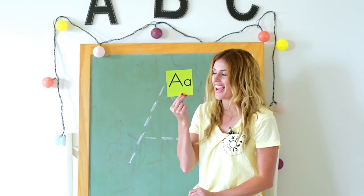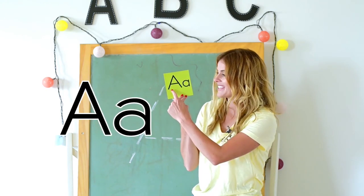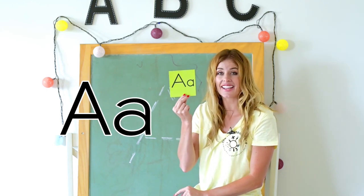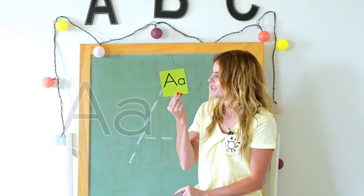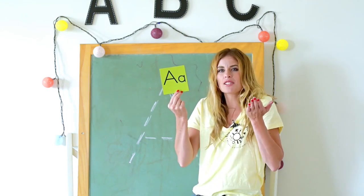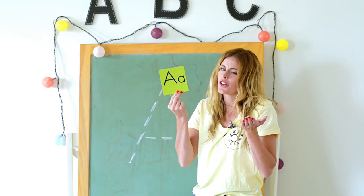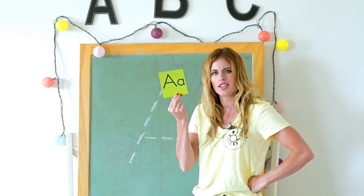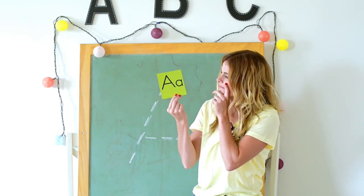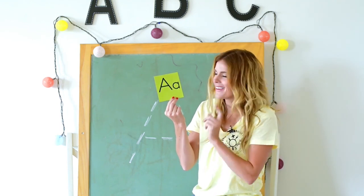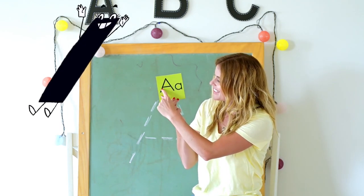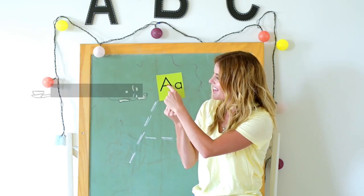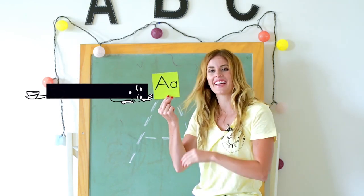This is the letter A — big A, small a. Let's look at the letter features of A. What does big A have? Are there circles, curves, slanted lines, dots? I see there's a slanted line, a slanted line, and a sweeping straight line.